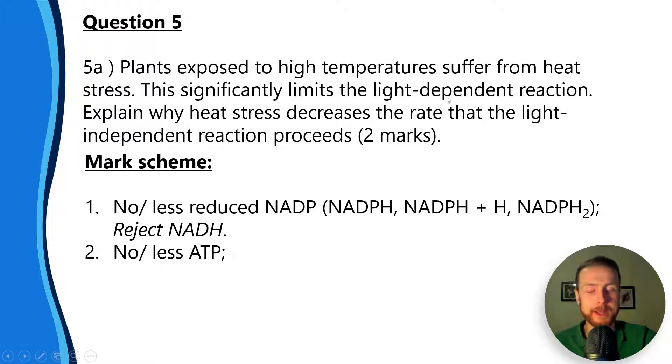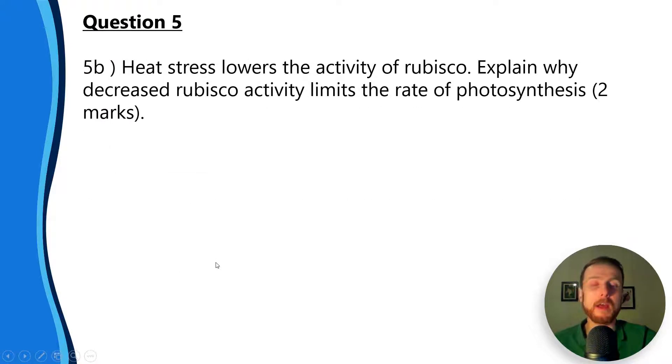First mark is for saying there'd be no or less reduced NADP, because if the light dependent reaction is limited, we're not going to have the NADPH to convert GP to TP. In addition, if we've got the light dependent reaction limited, we're not going to have photophosphorylation in the electron transport chain, so we're not going to have ATP.